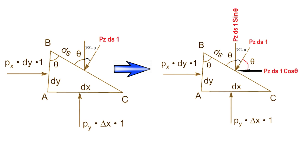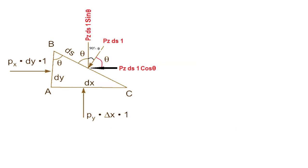The pressure force Pz into ds into 1 on face BC is resolved in both the y and x directions. The component that makes an angle with the reference line uses the cosine term, and the remaining component uses the sine term. Therefore, the component of pressure force Pz into ds into 1 in the direction of x is Pz into ds into 1 into cos theta.